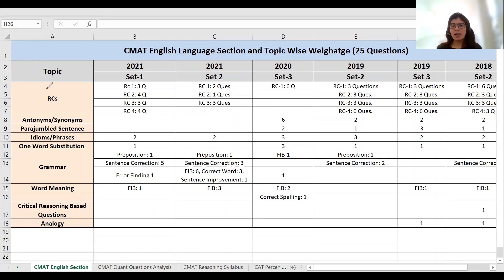First, I will tell you about the syllabus. In your CMAT exam, RC comes, antonyms synonyms. You can simply use word meaning because if you know word meaning, you can use antonyms and synonyms. Para jumble sentences, idiom phrases, one word substitution, grammar, word meaning. In critical reasoning, I have analyzed this set, only one question was asked. So this is not as much important, and analogy questions. So this is your syllabus.